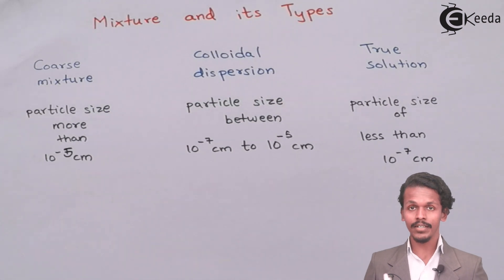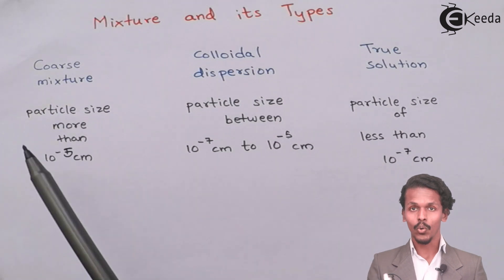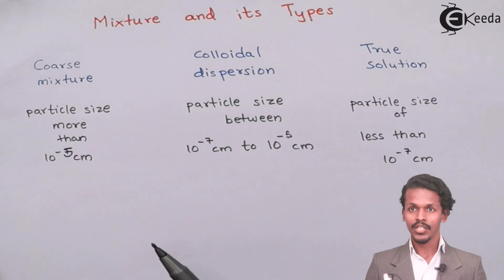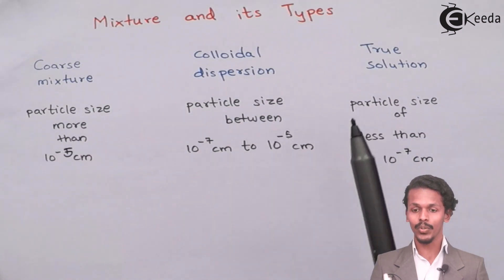Mixture is made up of more than two components, and they are divided into three parts: Coarse Mixture, Colloidal Dispersion, and True Solution. So what are each and every terms? We are going to learn it now.